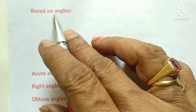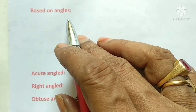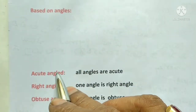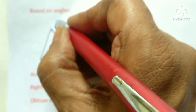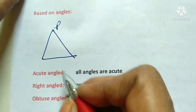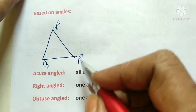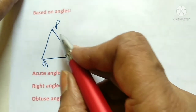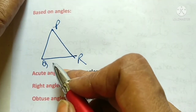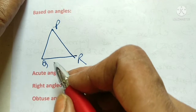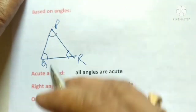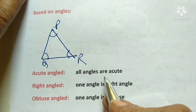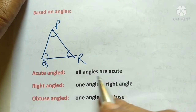The second classification is based on angles. We have a triangle where all angles are less than 90 degrees. Looking at angle P, angle Q, and angle R — all angles are less than 90 degrees. This is called an acute angle triangle.